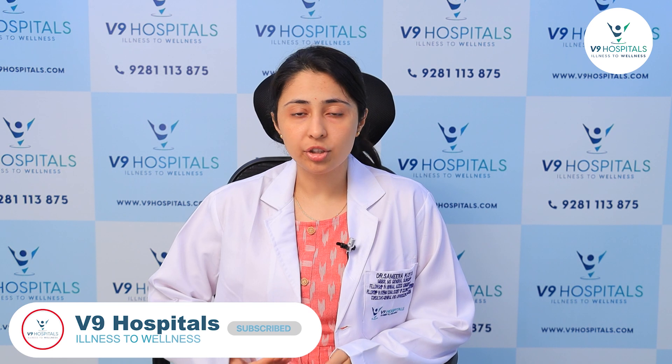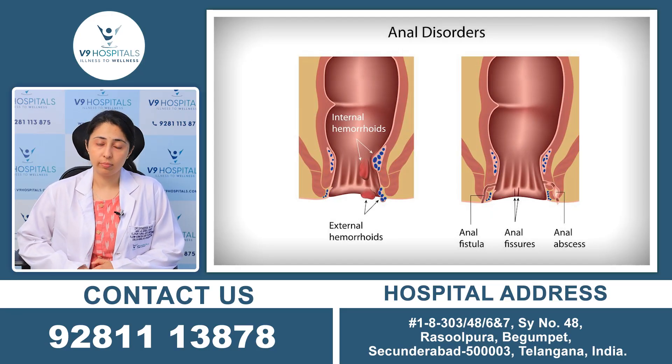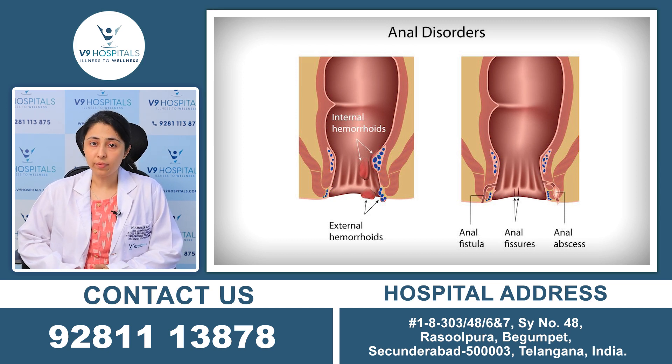If there is any problem in the motion area, it has an umbrella term called piles. In the general population, there are a lot of problems — bleeding — but that is not really the case. In the motion area, we frequently find three to four conditions: hemorrhoids, fissure, fistula, perianal abscess, or pilonidal sinus. So, there are different problems that can happen in the motion area.